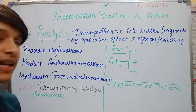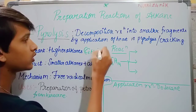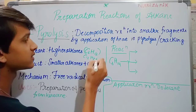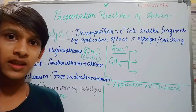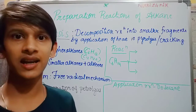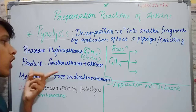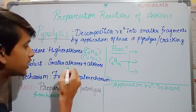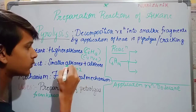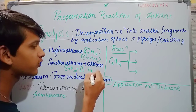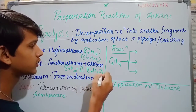The general reactant is higher alkanes such as C6H12 or C12H26 — compounds with a higher number of carbons. Alkanes break down into simpler alkanes and alkenes. The general formula for alkanes is CnH2n+2, and for alkenes it is CnH2n. So smaller fragments of both types are formed.